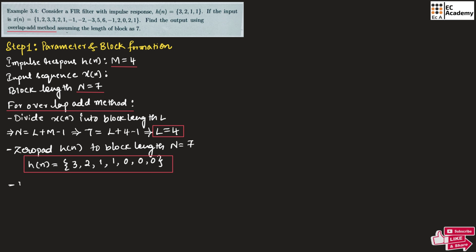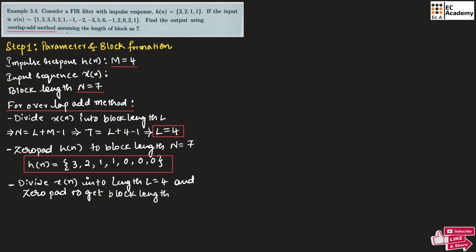In the next step let us divide x of n into length L is equal to 4 and zero-pad to get the block length N is equal to 7. Now this x of n will be divided into 4 sequences. The first 4 values will have 3 zeros appended to make length N equal to 7. Then we will take the next 4 values and append zeros to get length N equal to 7. So let us take the first 4 values and find x1 of n.